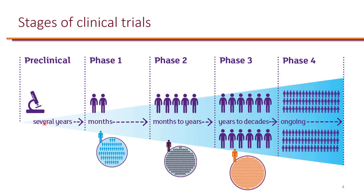Before a drug can come to the market, there will be a preclinical phase where the drug is studied first in a lab and then later studied in animals. And once a drug is discovered, it will make its way into clinical trials. Clinical trials can have phase one, two, three, and four.